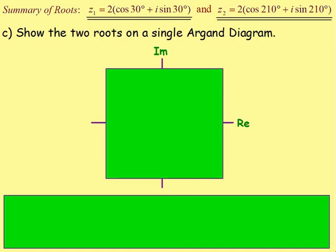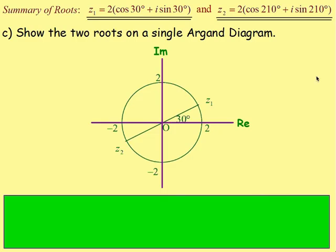Part C: show the two roots on a single Argand diagram. Draw your real and imaginary axes. For the first root, the modulus of 2 means you have a distance of 2 from the origin. Come out 2 at an angle of 30 degrees. Draw a line from that point to the origin — this is z1, the first root.